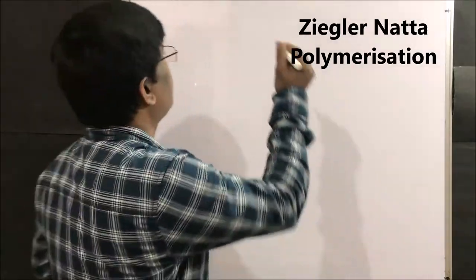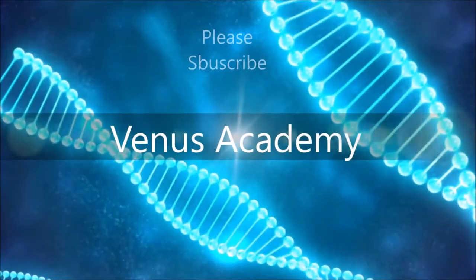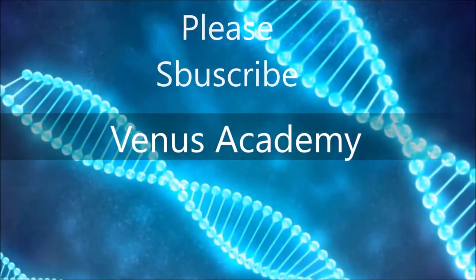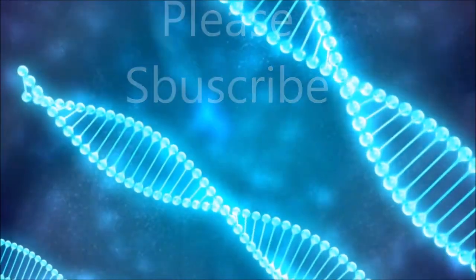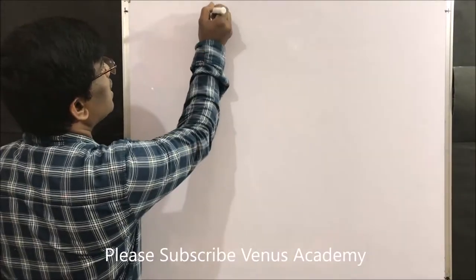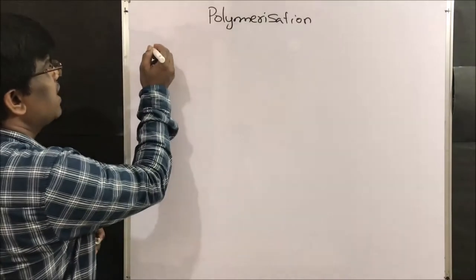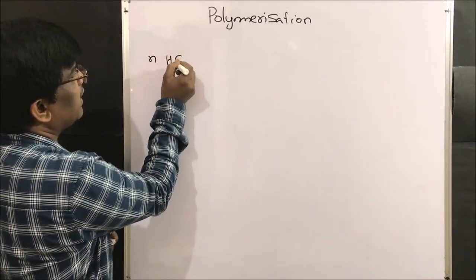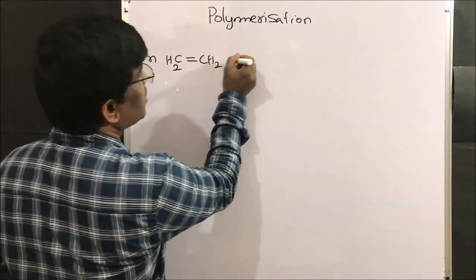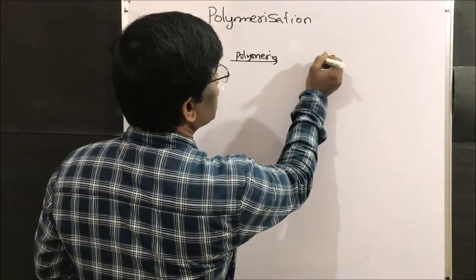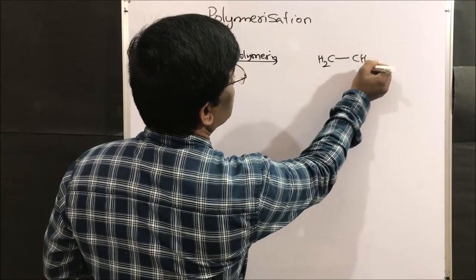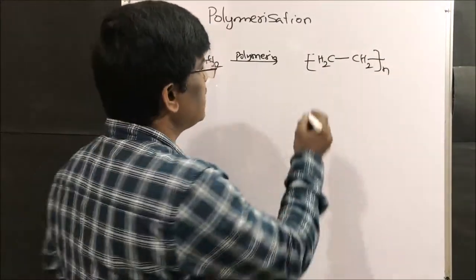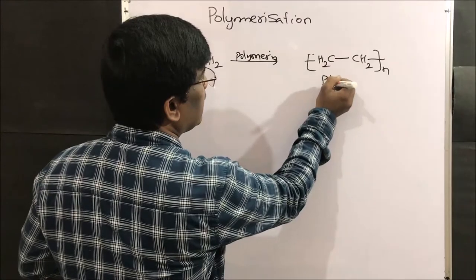Hello friends, welcome to the series of organic chemistry lectures. Today we are going to learn about polymerization. Let us take one example: n molecules of ethylene upon polymerization gives (CH2-CH2)n molecules of polymer. This is known as polyethylene.